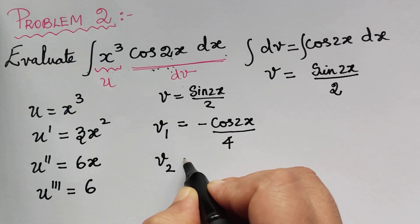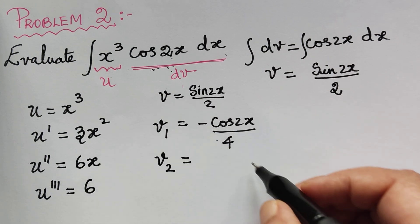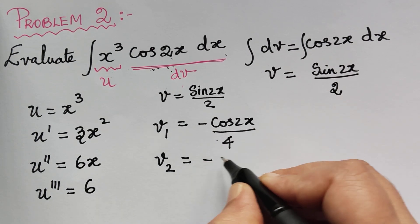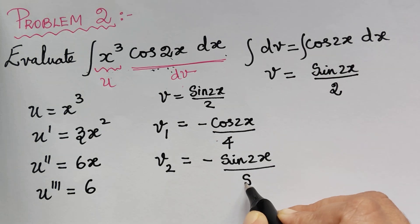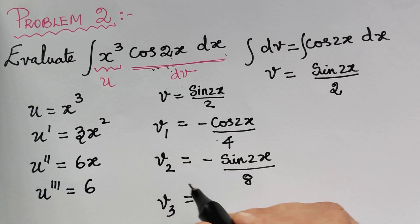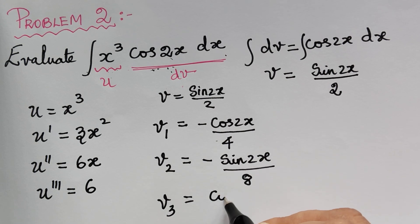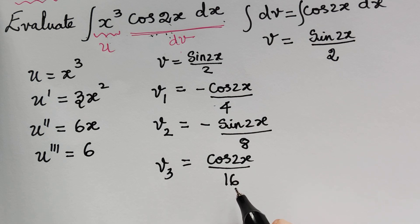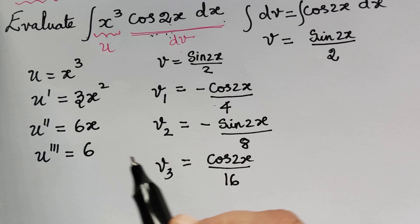Then we find v2, the integration of v1 with respect to x. The integral of cos 2x is sine 2x divided by 2. The minus carries through, and this gets multiplied with 4 to become divided by 8. So v2 equals minus sine 2x divided by 8. Next, we find v3, the integration of v2. The integral of sine 2x is minus cos 2x divided by 2. Minus times minus becomes plus, and dividing by 2 times 8 gives 16. So v3 equals cos 2x divided by 16. We stop here because we have terms only until u triple dash.